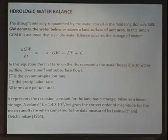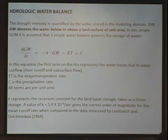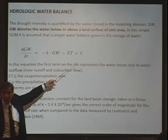For the hydrologic component, we use a very simple water balance for water storage, modeled as a linear storage with a recession constant estimated from climatological observations. The two forcing terms are evapotranspiration and precipitation.